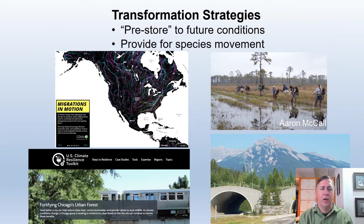Finally, transformation strategies help ecosystems to respond in new ways. For example, improving landscape connectivity to allow wildlife and plant range shifts, or adding species that are more heat tolerant or, if applicable, drought tolerant or salt tolerant.